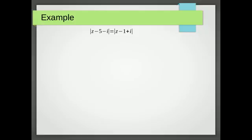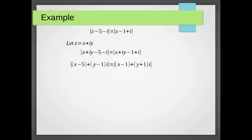Just as we did in our first locus video, we need to change z into the form x plus iy, which will be a general point. So we're going to substitute that into our moduli and we get x plus iy where there was z in each case. Now when we find the moduli we need it in real parts and imaginary parts, so we group those each together.